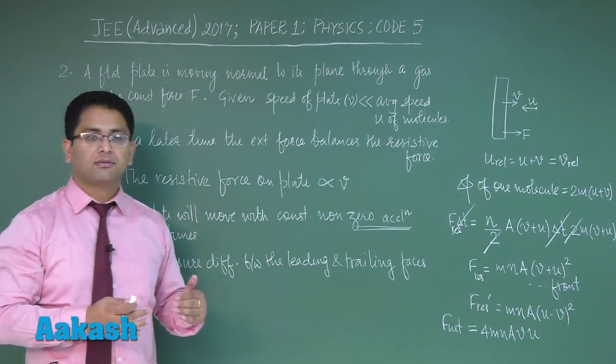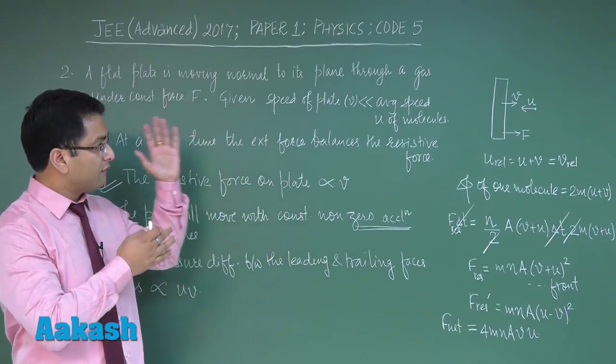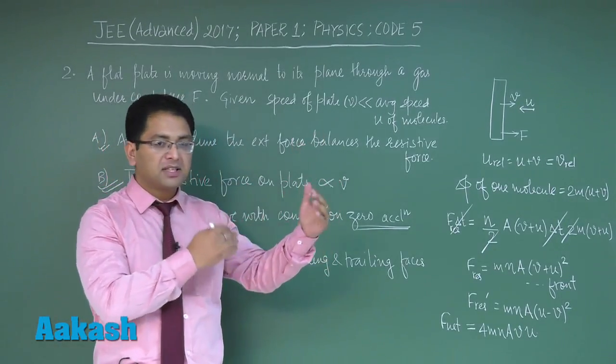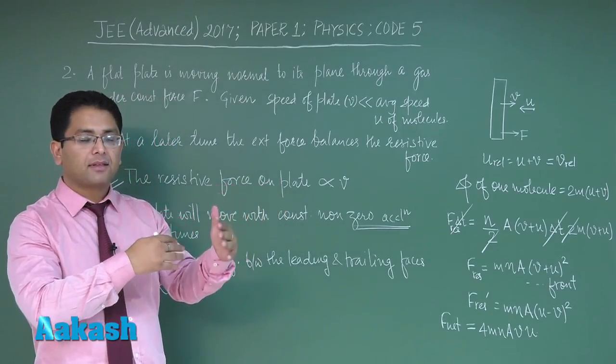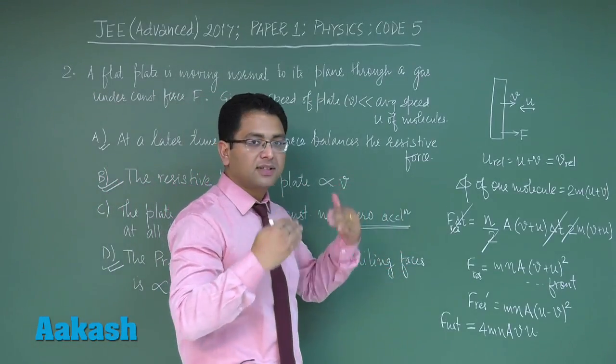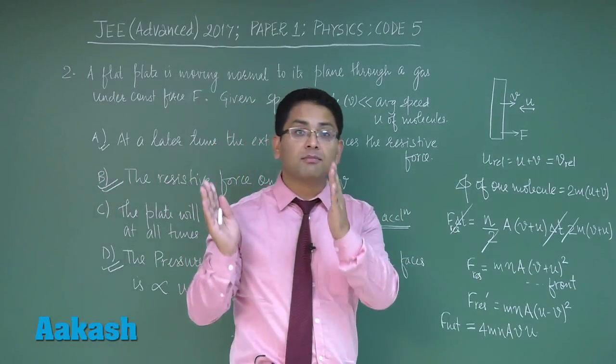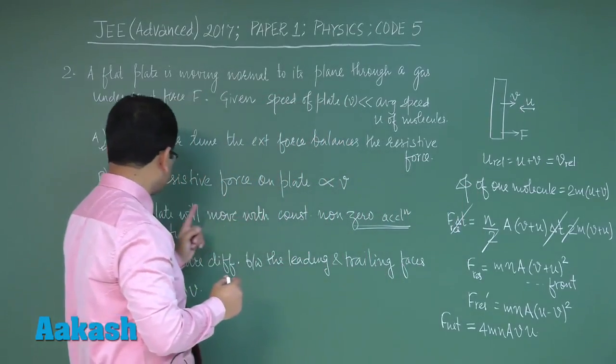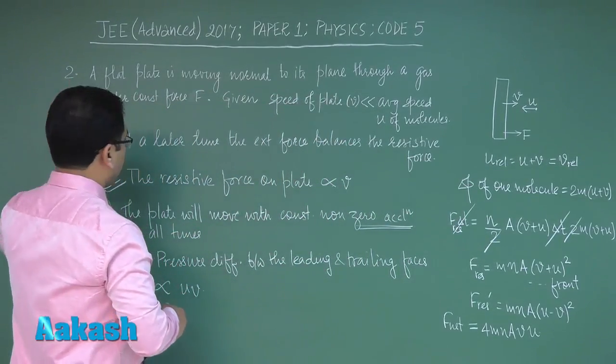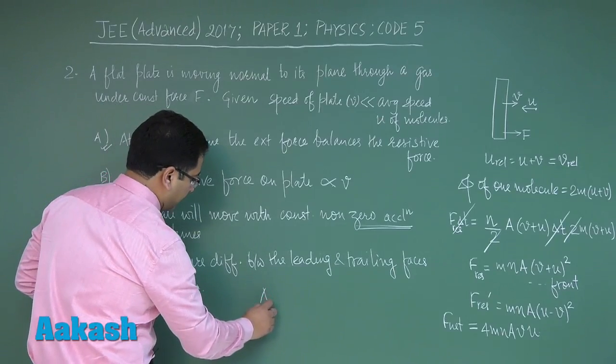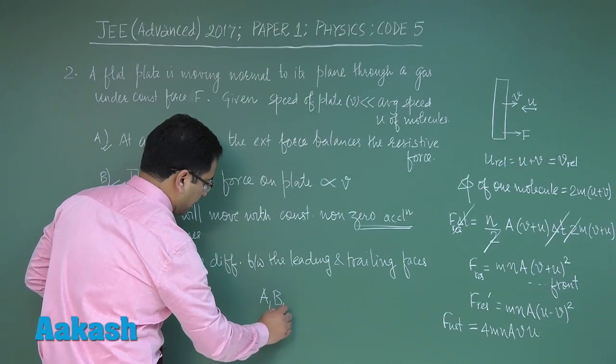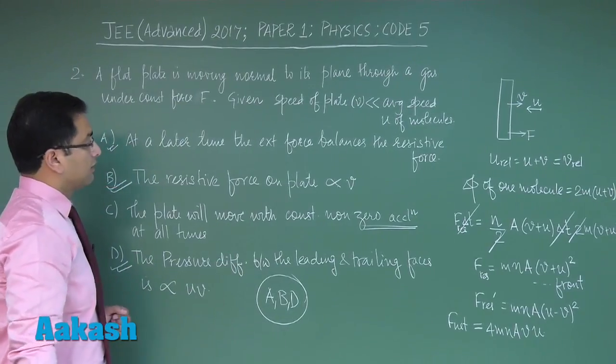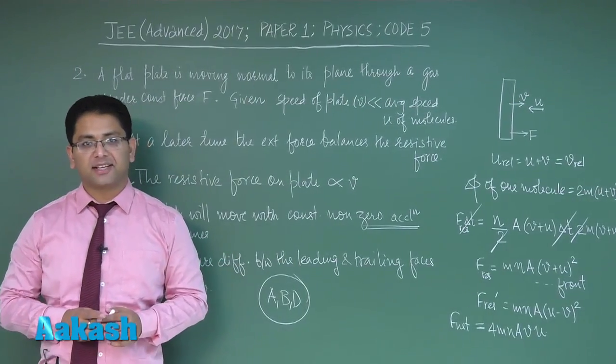As a matter of fact, we have already deduced that finally the gas molecules and plate ke beech collision ke karan - you can also explain in terms of viscosity - the plate would be moving with a constant velocity. So in that regard option C would be incorrect. So now question number 2 will have correct options as A, B, and D. Alright, let's move to question number 3.